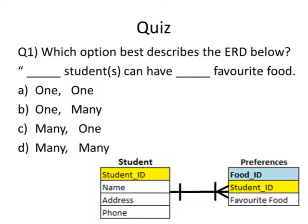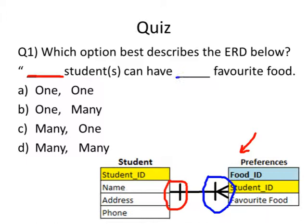Let's wrap up this chapter with a few short quizzes. The first question asks: which option best describes the ER diagram shown? Complete the sentence — how many students can have how many favorite foods? Looking at the ER diagram provided, translate the notation shown for the first blank and the second operation shown for the second blank.